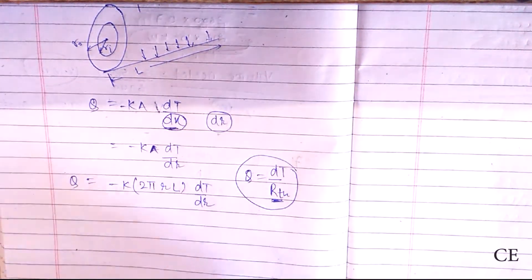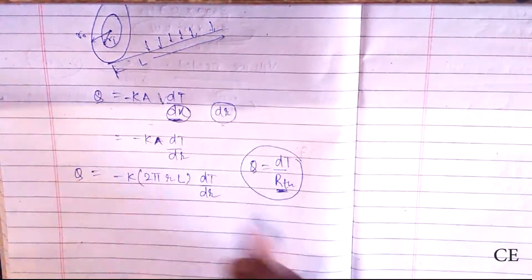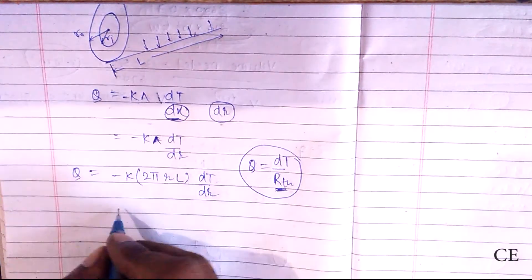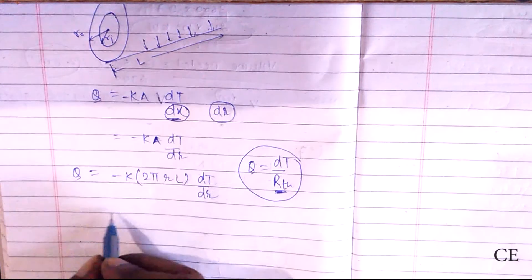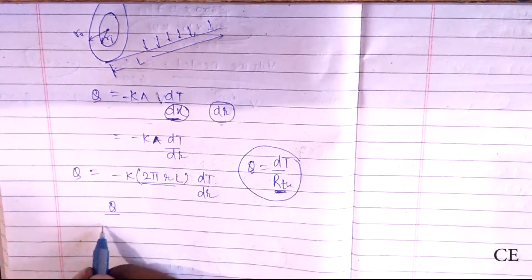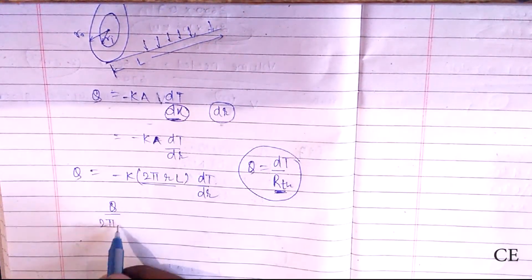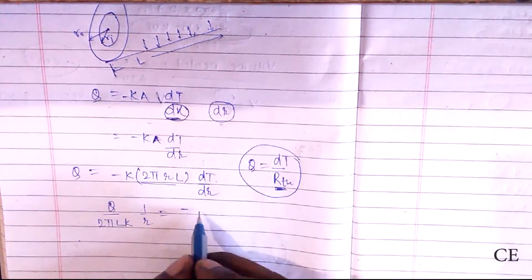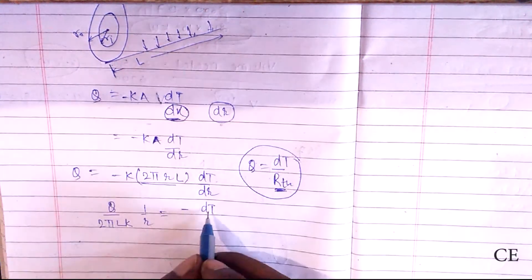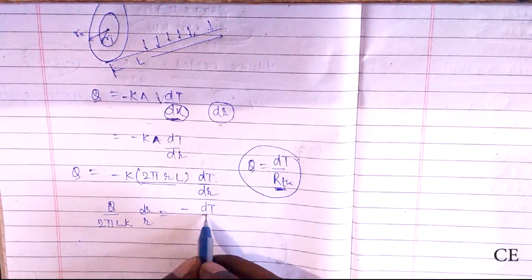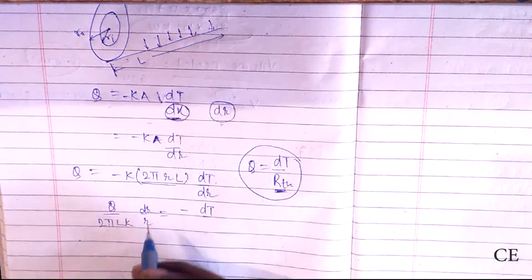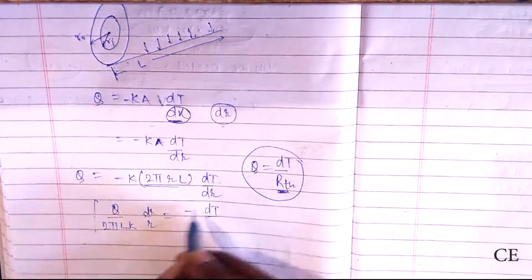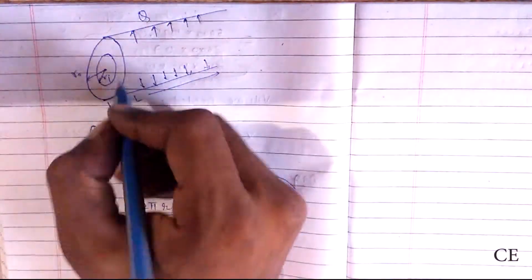Rearranging the equation: Q divided by (2πLK) times (1/R) dR equals negative dT. We now integrate both sides to find the exact values. The radius varies from R1 to R2 and the temperature varies from T1 to T2.